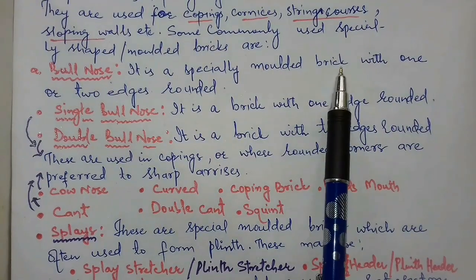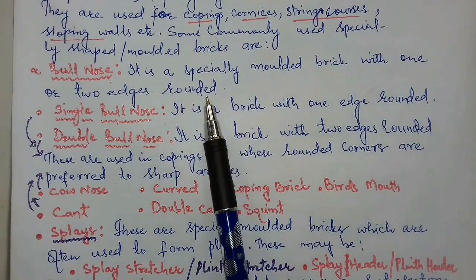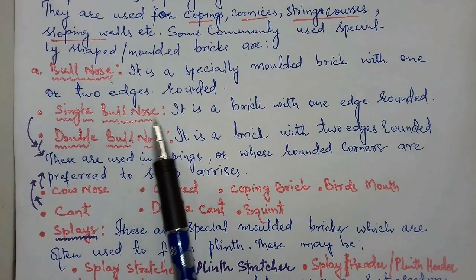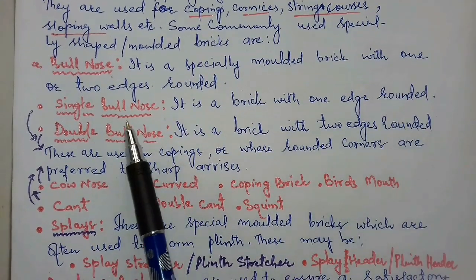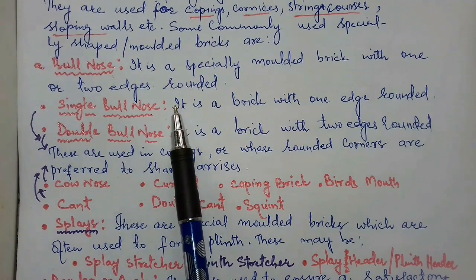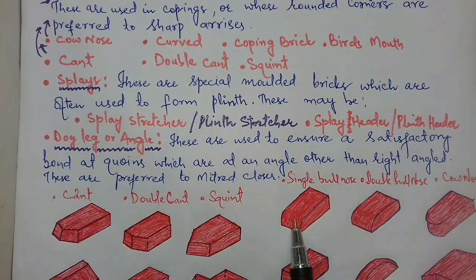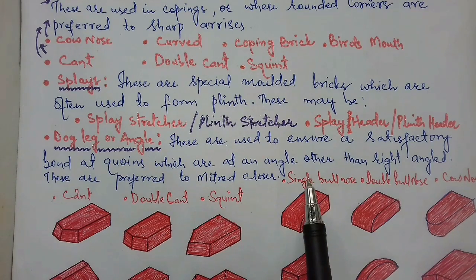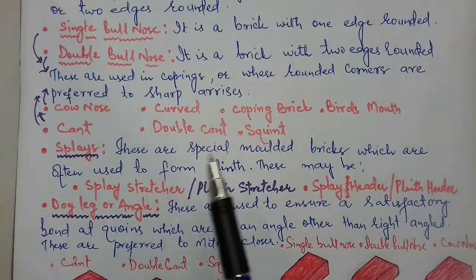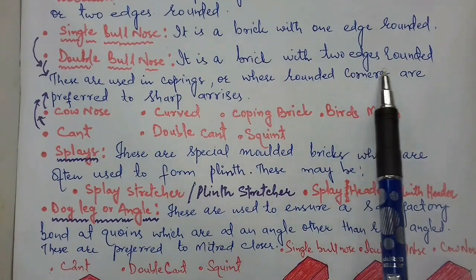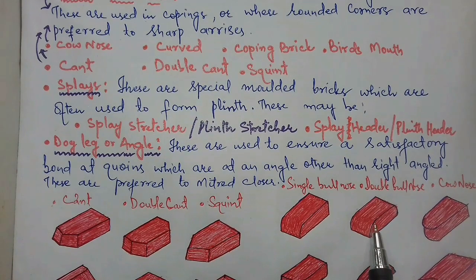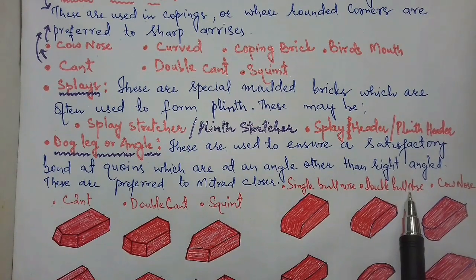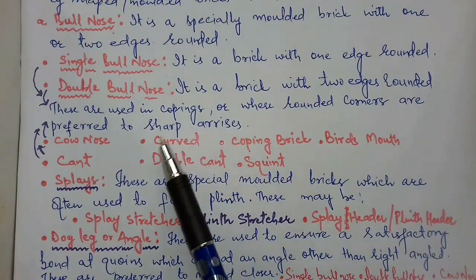Number one is bull nose: it is a specially molded brick with one or two edges rounded. Single bull nose: if a brick has one edge rounded, we can call it a single bull nose, as shown here. If it has two edges rounded, we can call it a double bull nose brick.